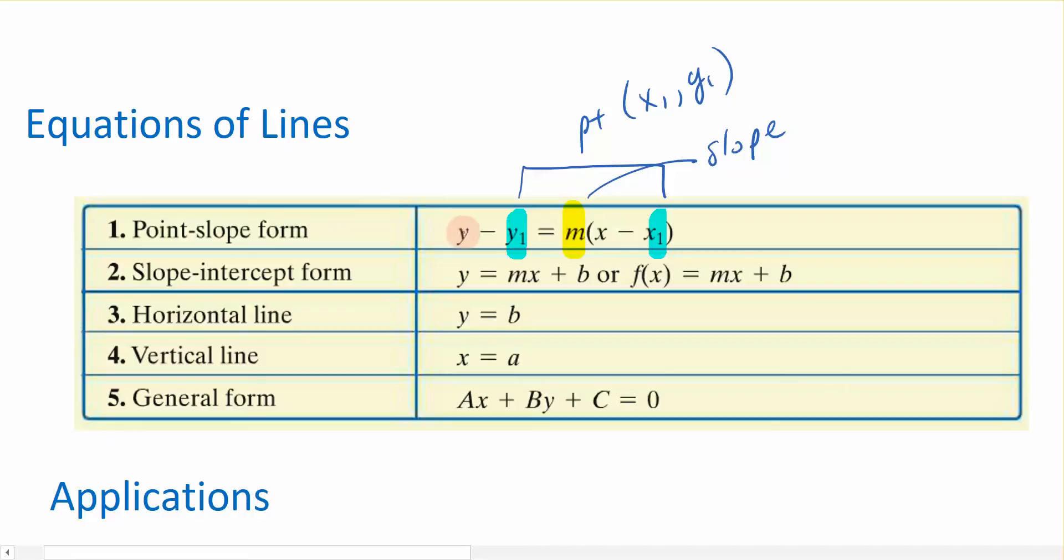Now, just to be clear, this y that does not have a subscript on it, and this x that does not have a subscript on it, those are the variables in the equation. These are the things that are changing. When we plug into and use the point-slope formula, we're plugging into all of these things that I highlighted.